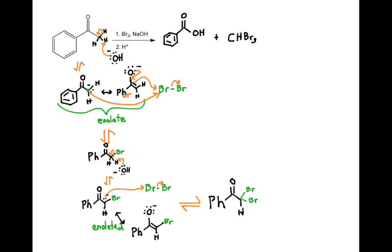Now with two bromines on the alpha carbon, this hydrogen is even more acidic. The same exact reaction happens again — a deprotonation step forms a third enolate, that enolate attacks Br2, and we get our tri-brominated methyl ketone.